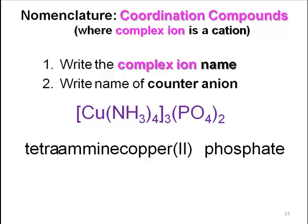It's copper-2. The phosphate has a negative-three charge, and there are two of them in the formula, so this whole complex — there are three of these — has to have a negative six total, meaning the complex cation must carry a positive two. Ammonia has no charge, so copper has to be the positive-two to make it neutral.